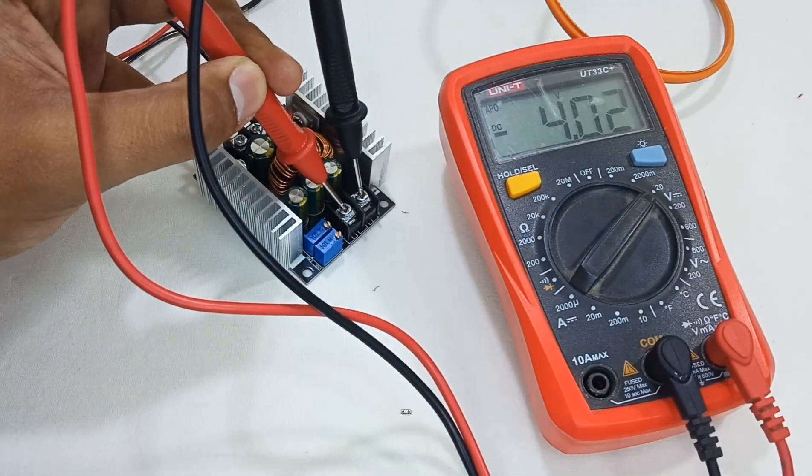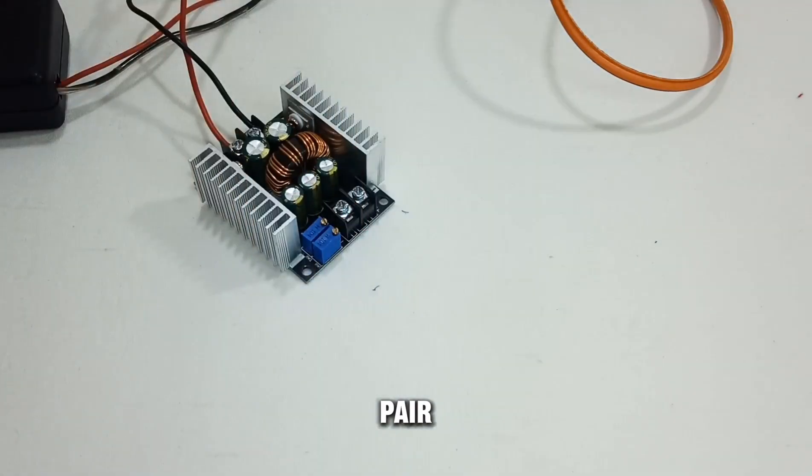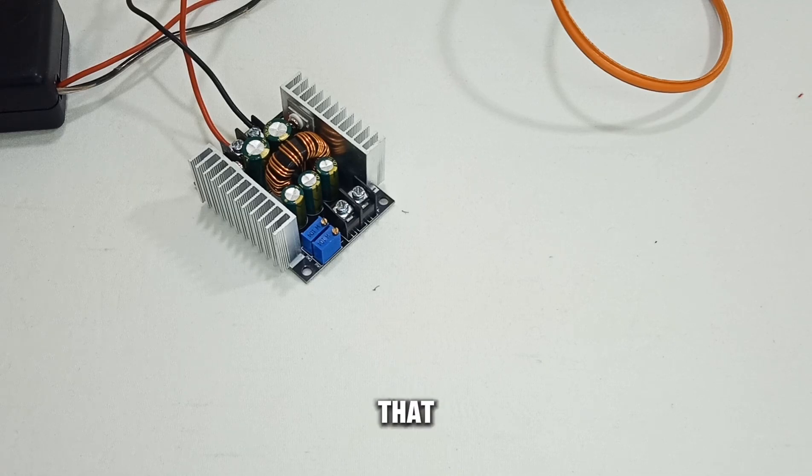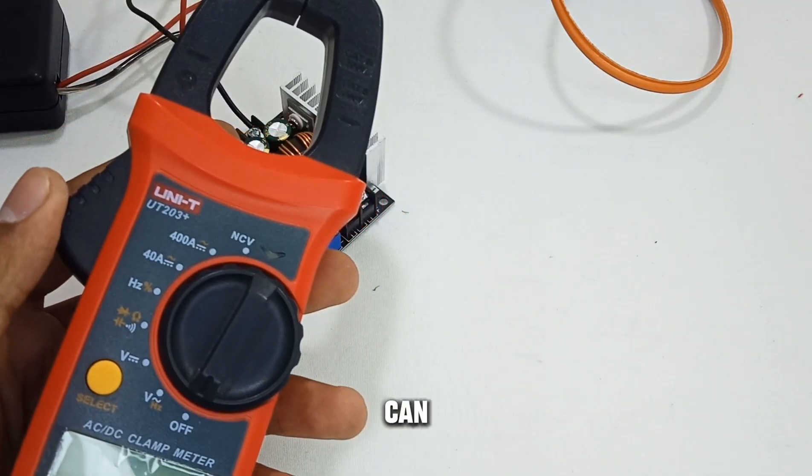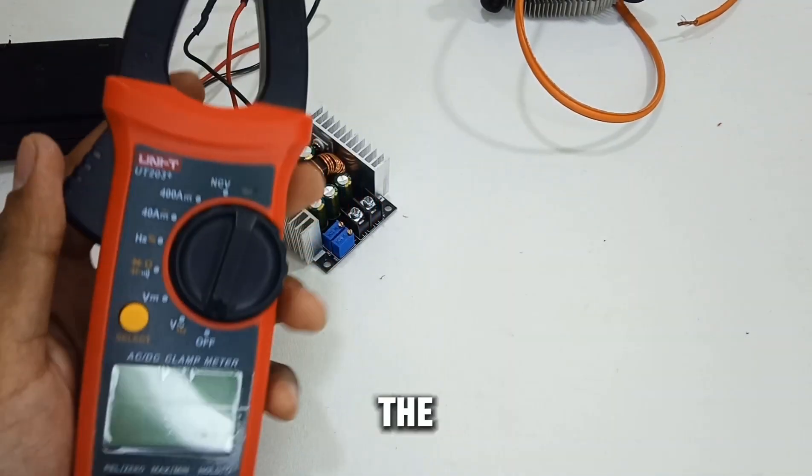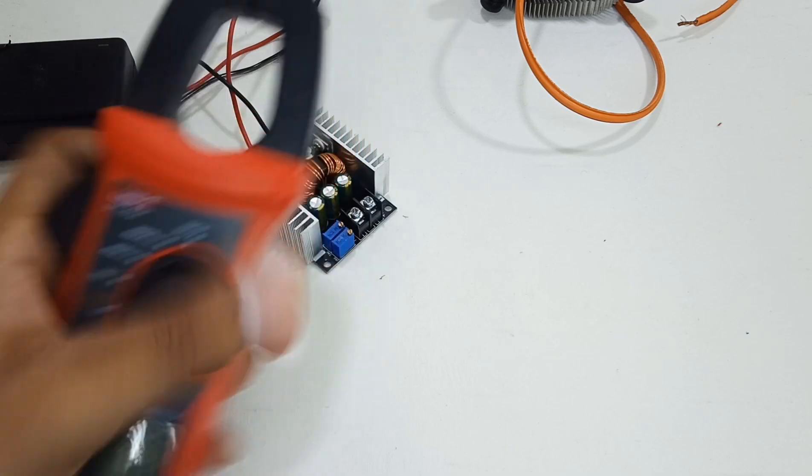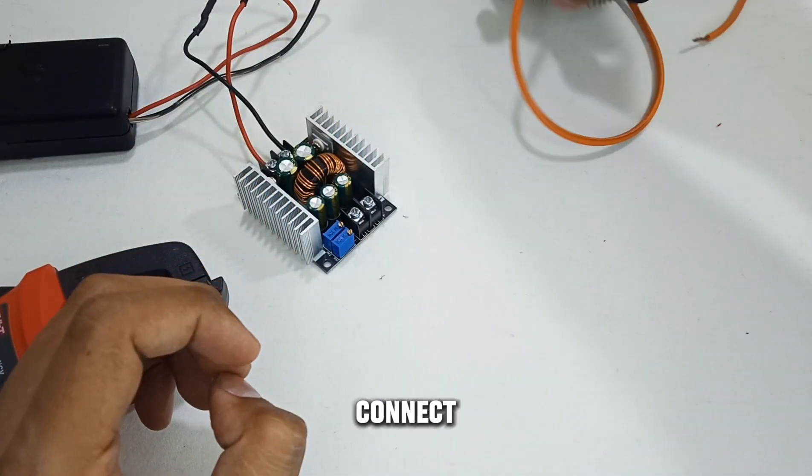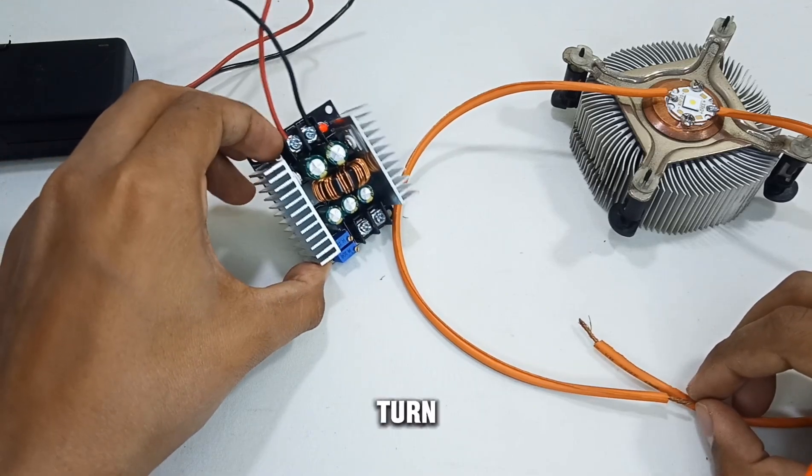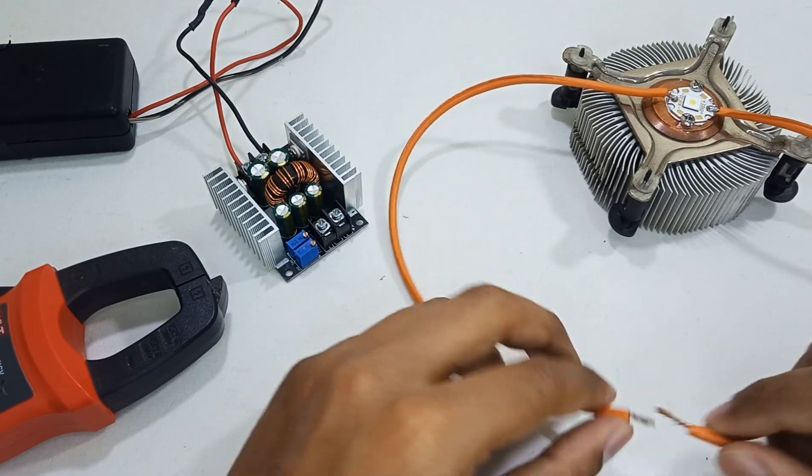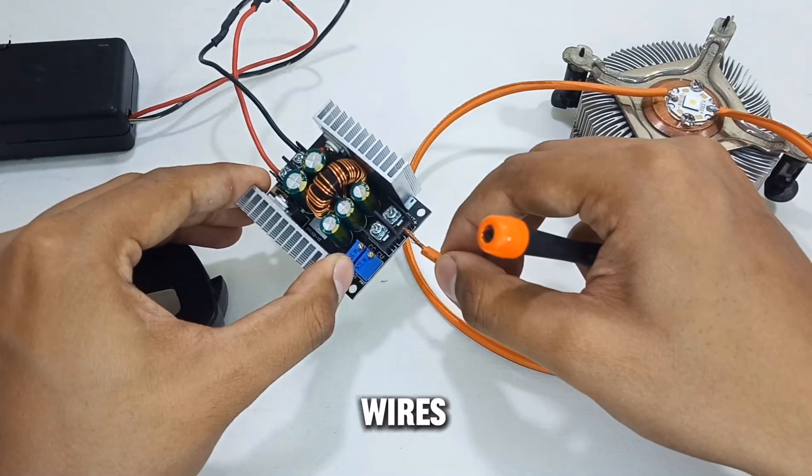4.02 is good. Now we will adjust the ampere after connecting the LED. For that purpose, you need a clamp meter so you can measure the amperes correctly. Let's connect the LED first. Turn off the module first, then connect the LED wires.